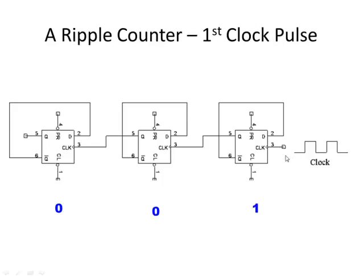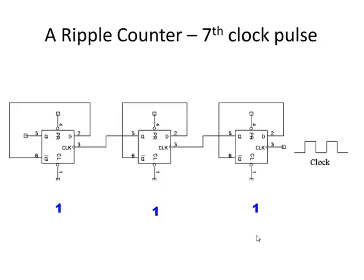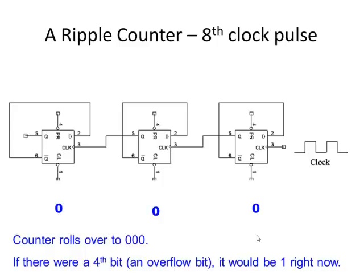On the next clock pulse, this goes to 0 and the count rolls over, and now we get 0, 1, 0 — that's binary 2. If I pulse again, I get 3; pulse again, I get 4. Fast forward until I pulse a 7th time, and I get 1, 1, 1 — that's the binary equivalent of the number 7. On the 8th clock pulse, in a regular ripple counter, the counter just rolls over to 0, and that's how our timer counters work as well.